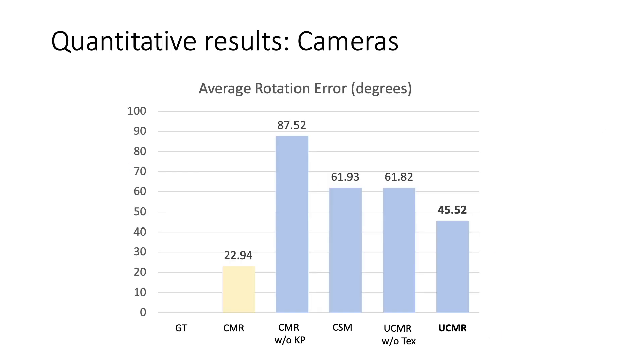We can quantitatively evaluate the performance by using the geodesic distance between predicted and ground truth rotations as our metric. Here, UCMR obtains an error that's at least 15 degrees better than the baselines with the same supervision.